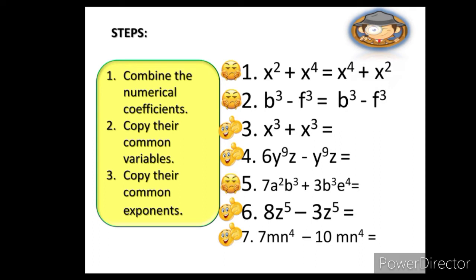Moving on to the next item. Since the number 3 can be combined, let's follow the steps. First, combine the numerical coefficients. The numerical coefficients here are imaginary 1 and they are both positive. Positive 1 plus positive 1 equals positive 2. And then, copy their common variables which is x. And lastly, copy their common exponent which is cube. Number 4. Just repeat the same steps. 6 minus imaginary 1 is equal to 5. Then, copy the variables and their exponents.